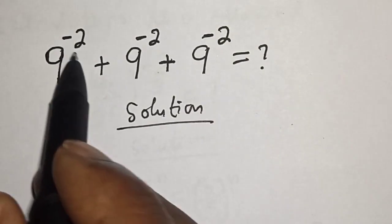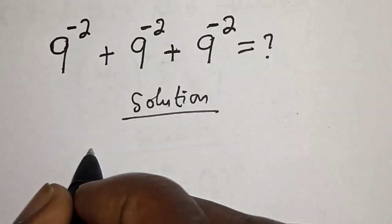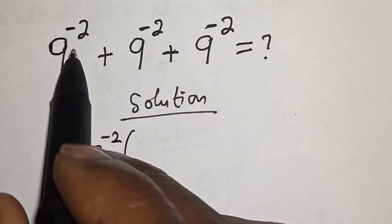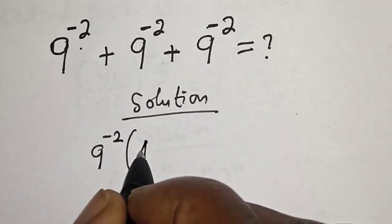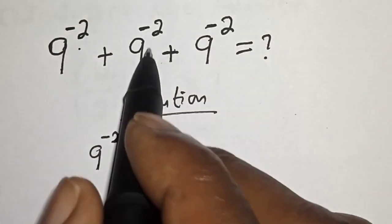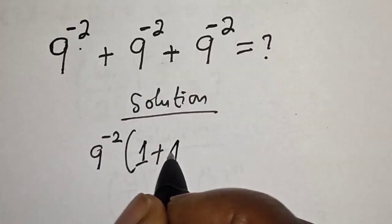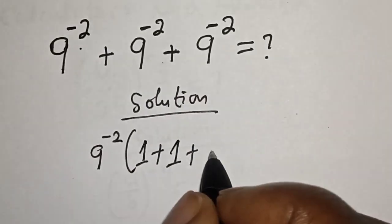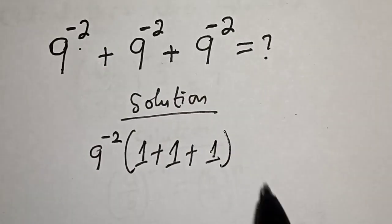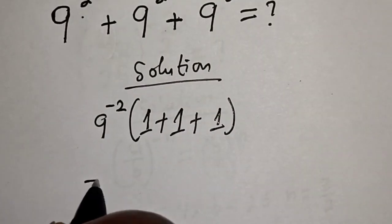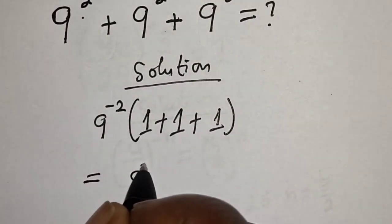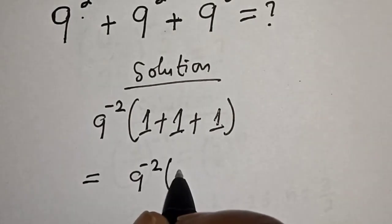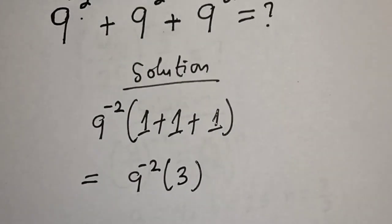Here we have 9 raised to power minus 2, which is very common — let's bring it out. 9 raised to power minus 2, bracket: 1 plus 1 plus 1. This is equal to 9 raised to power minus 2, bracket 3. And remember, 3 is also 3 raised to power 1.